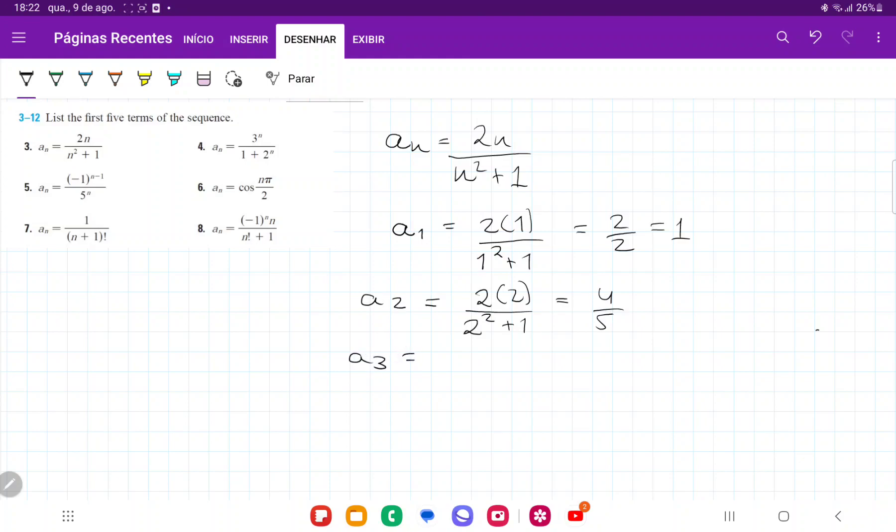For a3, we're going to have 2 times 3 over 3 squared plus 1, so that is going to give us 6 over 10, which is equal to 3 fifths.